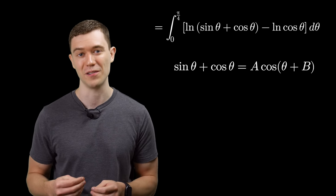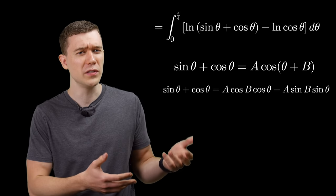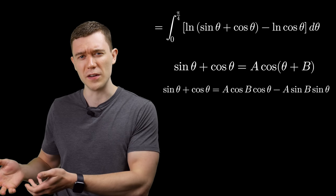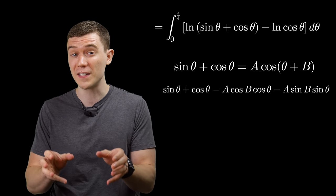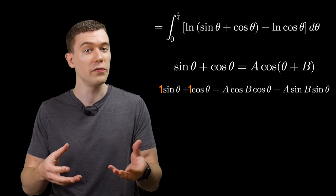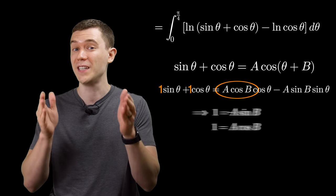Let's just apply that here. We have sine thetas on the left, we have sine thetas on the right, we have cosine thetas on the left, we have cosine thetas on the right. Let's do matching coefficients. The coefficients on the left side are 1. The coefficients on the right side, well, they're a little more complicated, but they have to equal 1.